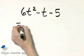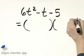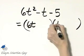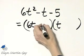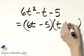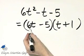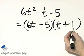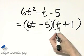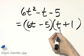All right, two sets of parentheses. Let's try 6T and T, and factors of 5. Let's try negative 5 and positive 1. Checking the outside terms, that's 6T minus 5T. That's 1T or T,